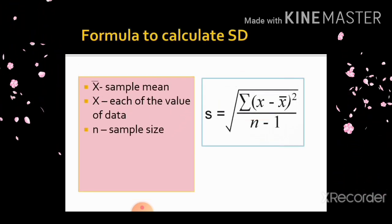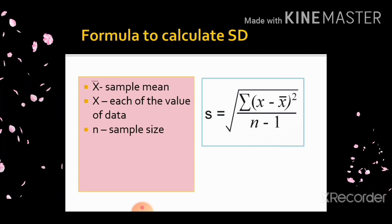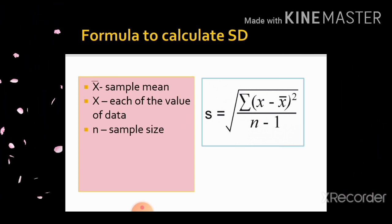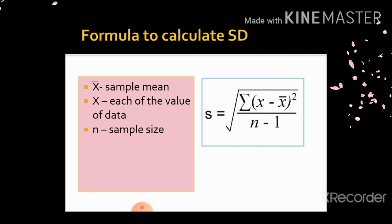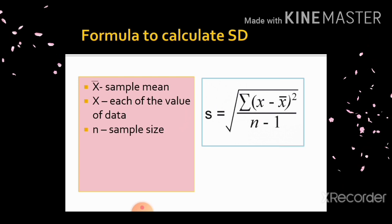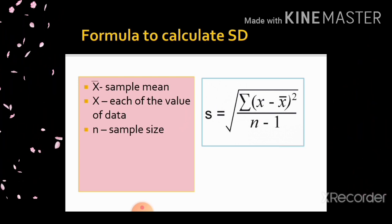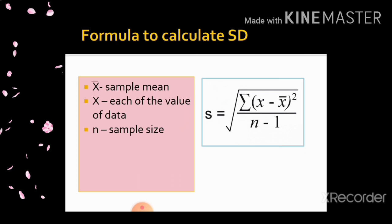The formula to calculate standard deviation, which we have already discussed, is: S = √(Σ(X − X̄)² / (N − 1)), where X̄ is the sample mean, X is each data value, and N is the sample size. Here the sample size is 7.